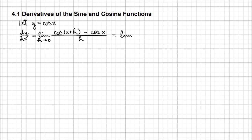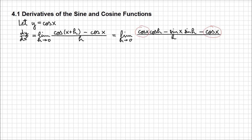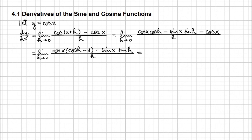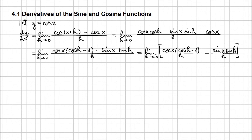The derivative of cosine of x is the limit when h approaches 0 of cosine of x plus h minus cosine of x over h. We expand cosine of x plus h as cosine of x cosine of h minus sine of x sine of h, then subtract cosine of x, all over h. We notice we can factor out cosine of x, leaving cosine of x times cosine of h minus 1, minus sine of x sine of h, all over h. We then separate this into two fractions, noting that the limit of a difference is the difference of the limits.